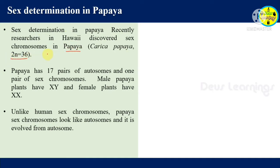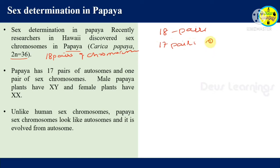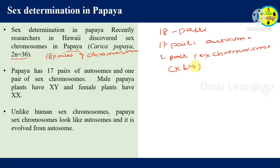So papaya has 18 pairs of chromosomes — 17 pairs are autosomes and one pair is the sex chromosome. The sex chromosome pair consists of X and Y, just like humans. If X and Y, the plant becomes male. If X and X, it becomes female.